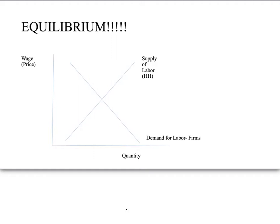Now you've dealt with supply and demand for labor, or resources in general. Now we're ready to put them together and find equilibrium. The vertical axis is labor with wage, and it's really a price. If it's not talking about labor, then it can't be a wage — it's either interest, profit, or rent. Quantity is on the horizontal axis — it's quantity of laborers. I'm drawing a labor market graph.